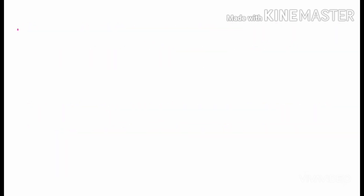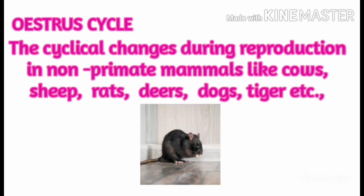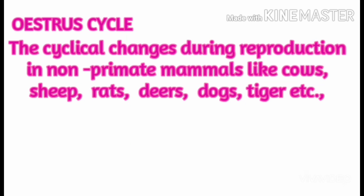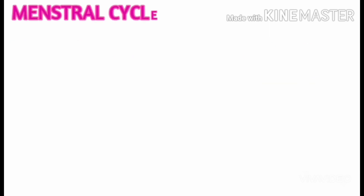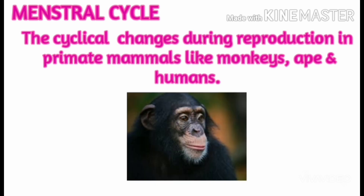The estrous cycle refers to the cyclical changes during reproduction in non-primate mammals like cows, sheep, rats, dogs, tigers, etc. The menstrual cycle refers to the cyclical changes during reproduction in primate mammals like monkeys, apes, and humans.